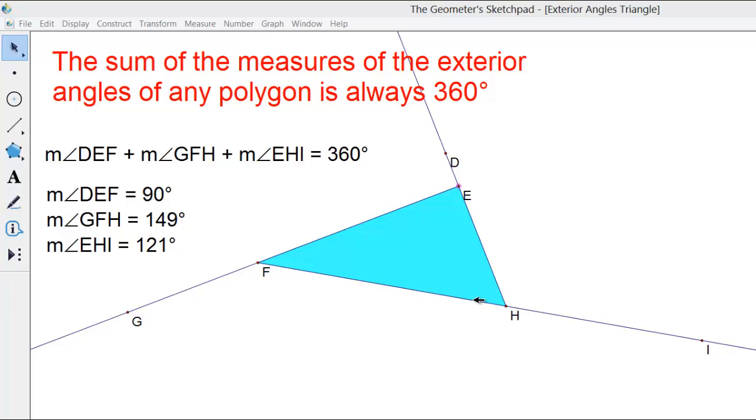Notice that I have my triangle constructed and the exterior angle DEF, which is right here, exterior angle GFH is right here, and exterior angle EHI is here.